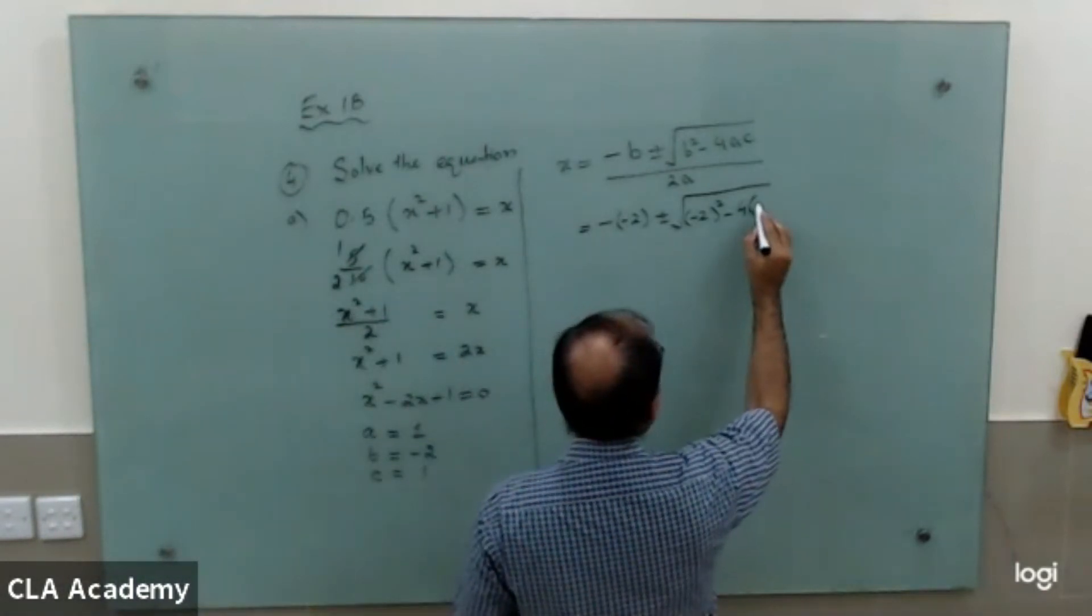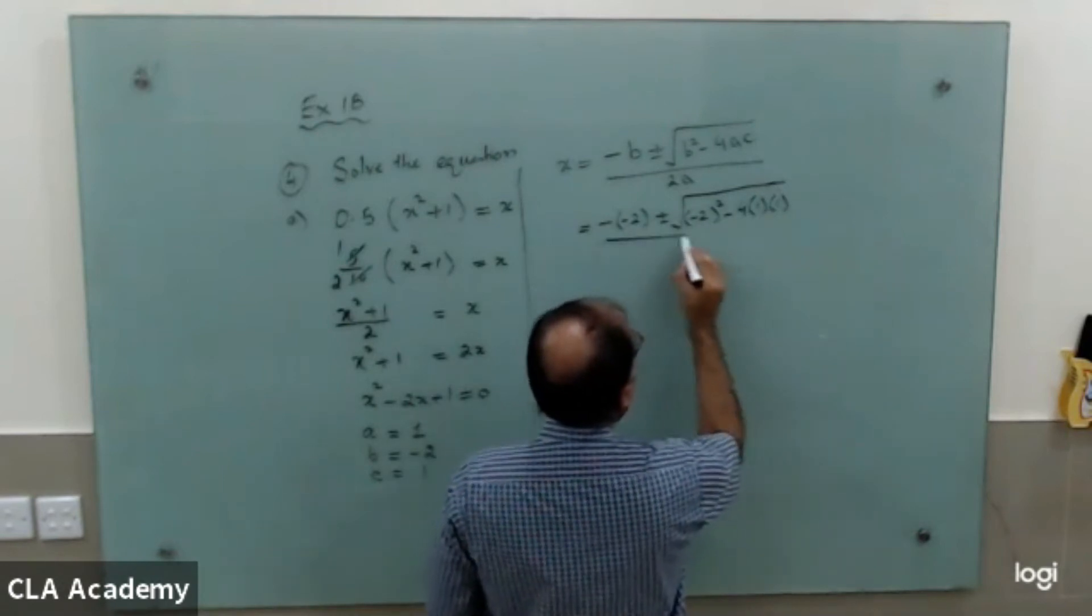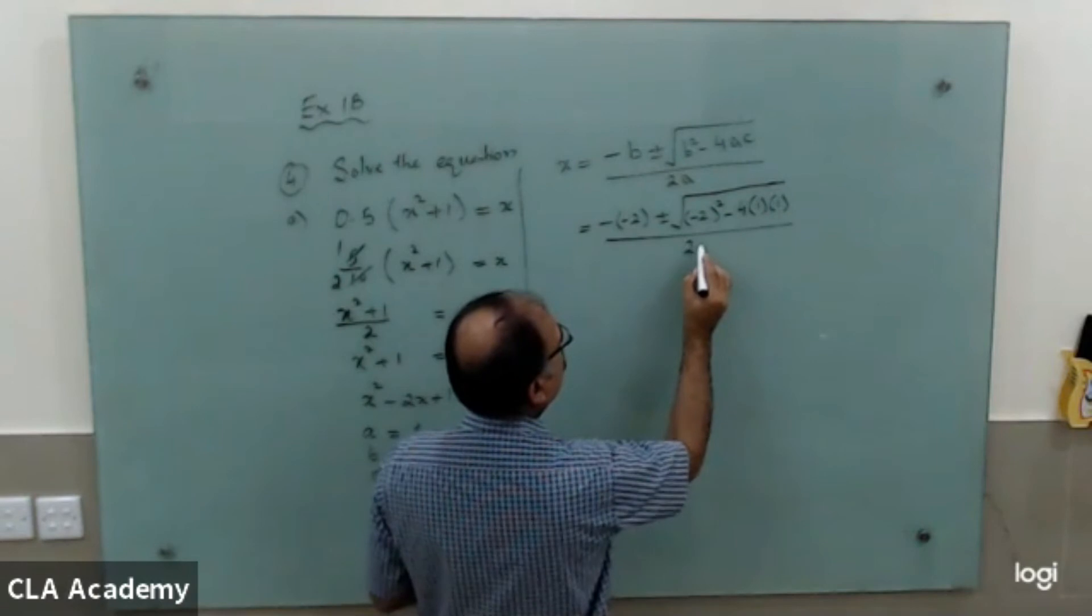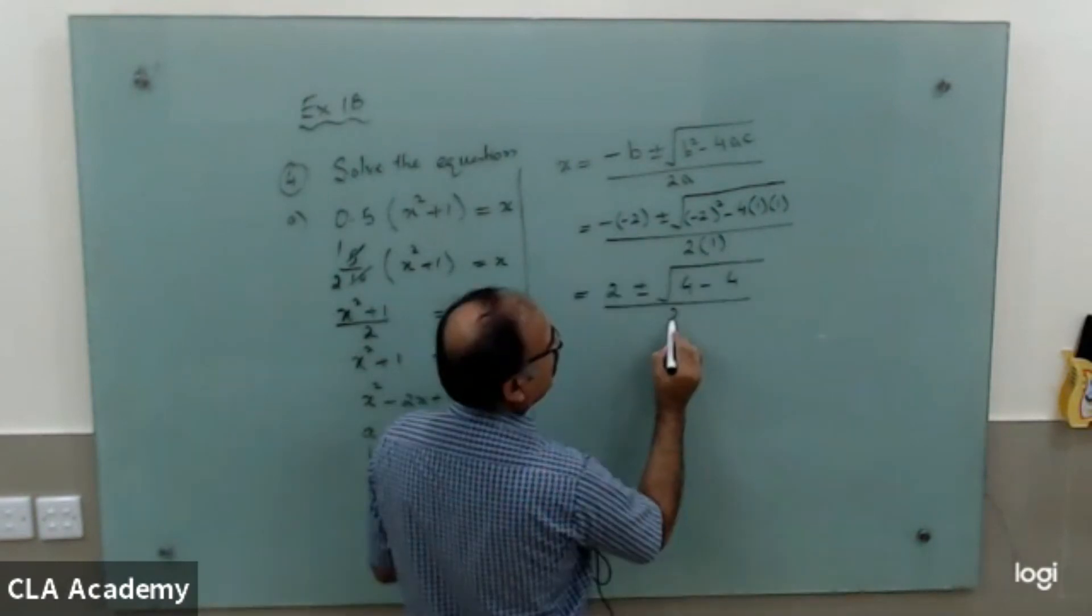So you write as 1 equal to 1, divided by 2, and a value is 1, 2 ones at a.